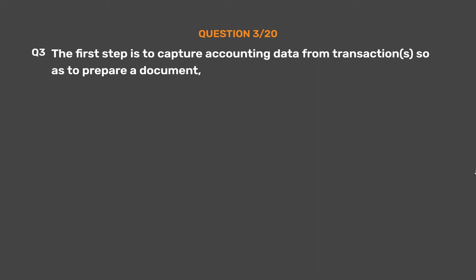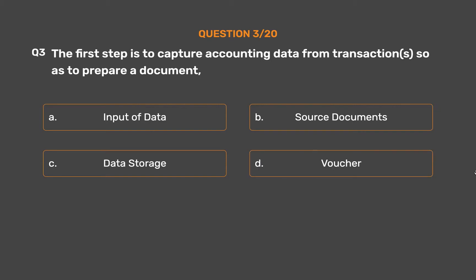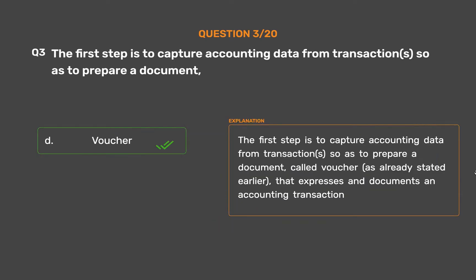Question number 3. The first step is to capture accounting data from transactions so as to prepare a document. Option A: Input of data. Option B: Source documents. Option C: Data storage. Option D: Voucher. The correct answer is Option D: Voucher. The first step is to capture accounting data from transactions so as to prepare a document called a voucher, as already stated earlier, that expresses and documents an accounting transaction.